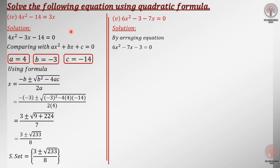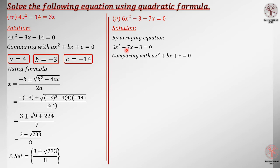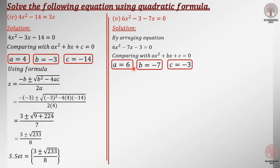Signs are changed just like here — this is a very good example because you can compare the two questions. When we are taking 3x to the other side, there is the positive sign, and when you bring it to the other side, it becomes negative. But in this question, there is no term on the right side; all the terms are already on the left hand. After arranging, comparing with ax squared plus bx plus c equals 0, you get: a is 6, b is minus 7, and c is minus 3.